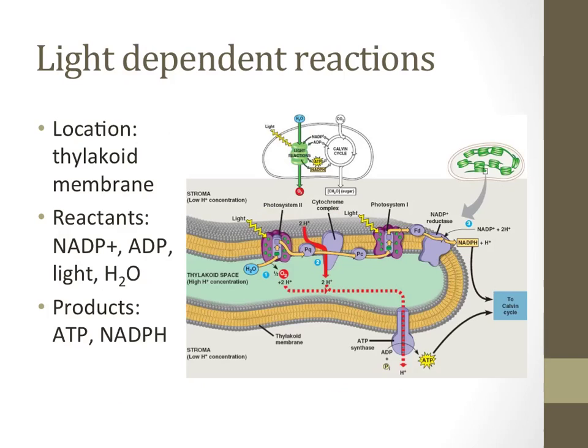The thylakoid is a structure within the chloroplast where chlorophyll, the pigment responsible for absorbing the sun's energy, is located. In this process, energy from light and water are used to convert NADP plus and ADP into NADPH and ATP. ATP and NADPH are the molecules that are needed to fuel later steps in photosynthesis.